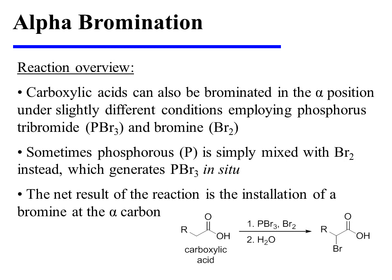Carboxylic acids can also be brominated in the alpha position under slightly different conditions. These conditions employ phosphorus tribromide and bromine. Alternatively, you will sometimes see phosphorus being mixed with bromine, which generates phosphorus tribromide in situ. The net result of the reaction is the installation of a bromine at the alpha carbon.